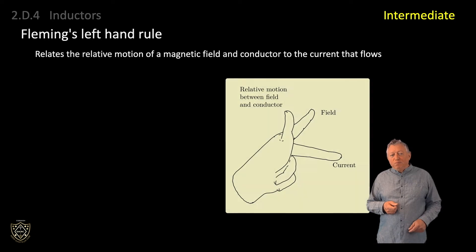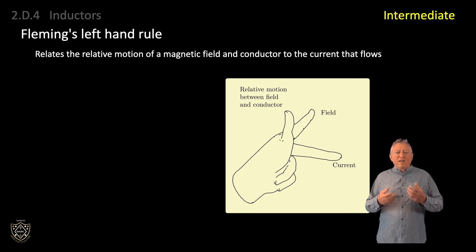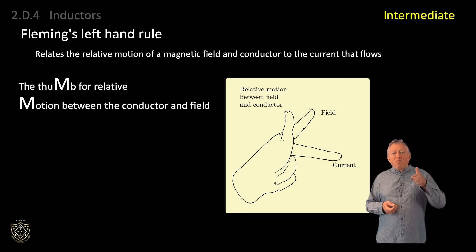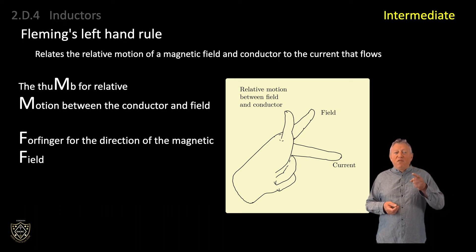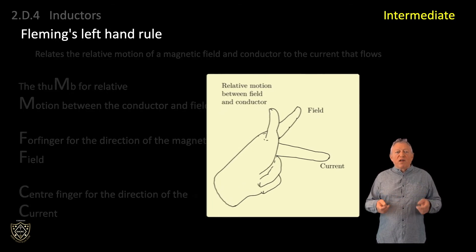Fleming's left hand rule relates the relative motion of a magnetic field and conductor to the current that flows. The thumb, emphasizing the M for motion, shows the relative motion between the conductor and the field. The forefinger, emphasizing the F for field, shows the direction of the magnetic field. The centre finger, emphasizing the C for current, shows the direction of the current flow.